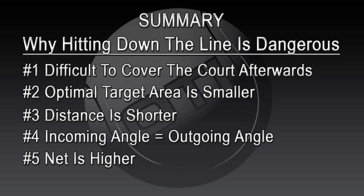Let's look at a summary. There are five reasons why hitting down the line is dangerous and hitting cross court is usually the smarter option. Number one: it is more difficult to cover the court after a down the line shot — you have a much larger distance to cover to get to your optimal recovery position. Number two: the optimal target area is smaller. When you go down the line you have to hit a really good shot — you can't get away with leaving it short and weak, whereas hitting cross court gives you much more margin because you're closer to your optimal recovery position.